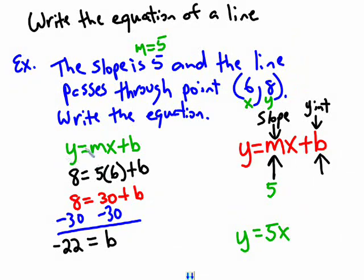But in this process here, I solved for b. So I have the other answer that I need, or the other information that I need to actually write the equation. So my other answer is negative 22. So together, they give me the equation.